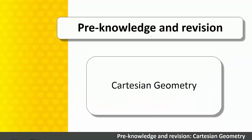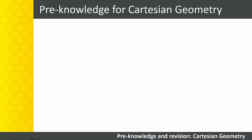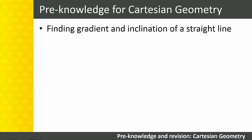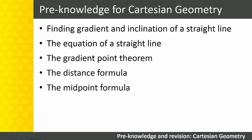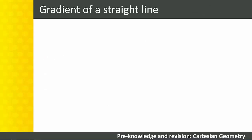Pre-knowledge and revision: Cartesian Geometry. What pre-knowledge should students have before beginning this work? Levels 2 and 3 covered various concepts and formulae that students need to understand and apply in Level 4. These include finding the gradient and inclination of a straight line, the equation of a straight line, the gradient-point theorem, the distance formula, and the midpoint formula. It's also essential that students know how to complete the square, which was covered in Level 3. Before we begin with the first learning outcome, let's revise some of this pre-knowledge.